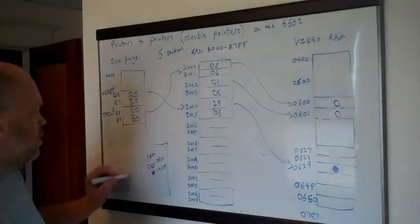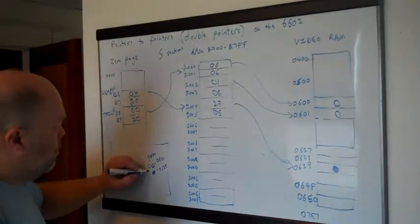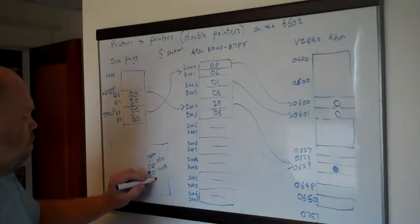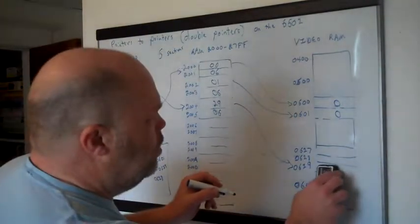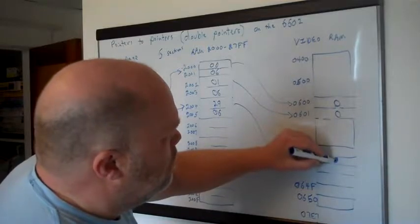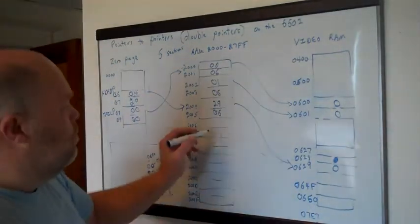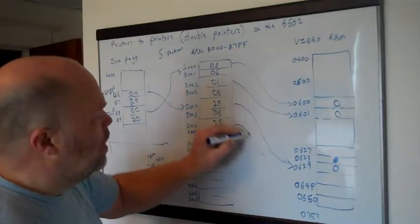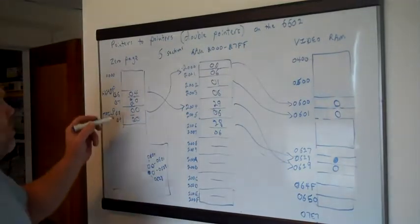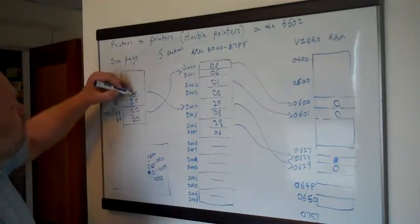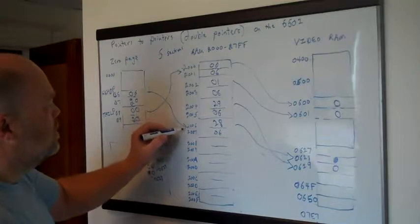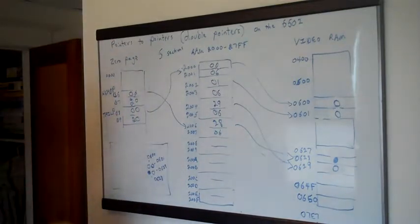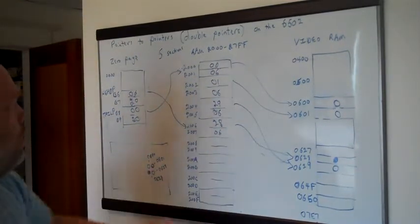Tail P can still stay the same because the tail of our worm is still back at 0600. Now let's press H to go left. The worm head moves to 0628, leaving behind a body character. 0628 gets added to the pointer list, we increment head P again by 2 to 2006. So now head P points to 2006, which points to 0628. Tail P stays the same because our worm still isn't five sections long.